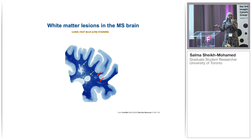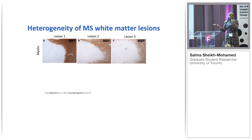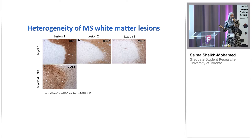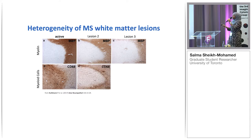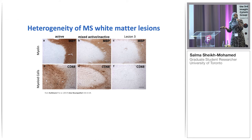Myelin alone isn't enough to tell us about what's going on during MS. Here you're looking at three different lesions all stained for myelin — the staining patterns are almost identical. But when we look at the cells in these different areas you really start to see the differences. With CD68 marking resident myeloid cells, lesion 1 shows CD68 positive cells throughout the tissue — an active lesion. Lesion 2 has cells concentrated around the rim — a mixed active/inactive lesion. Lesion 3 shows no CD68 positive cells at all — an inactive lesion.